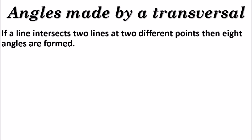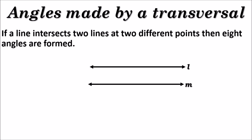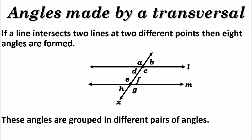Angles made by a transversal: if a line intersects two lines at two different points, then eight angles are formed. Here we have line l and line m intersected by transversal x, which forms four angles with each line. The angles are labeled a, b, c, d, e, f, g, and h — eight angles total. These angles are grouped into different pairs.